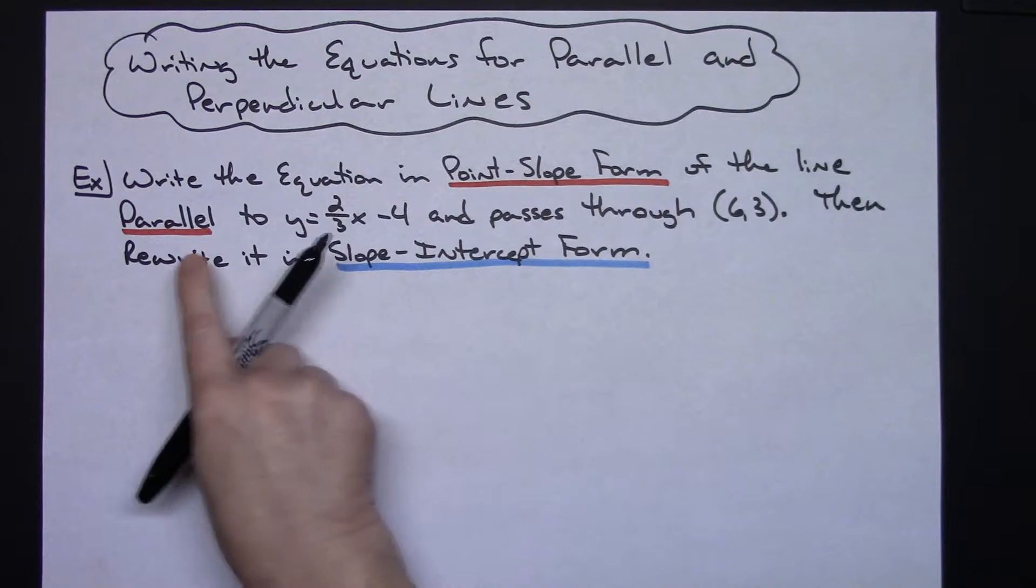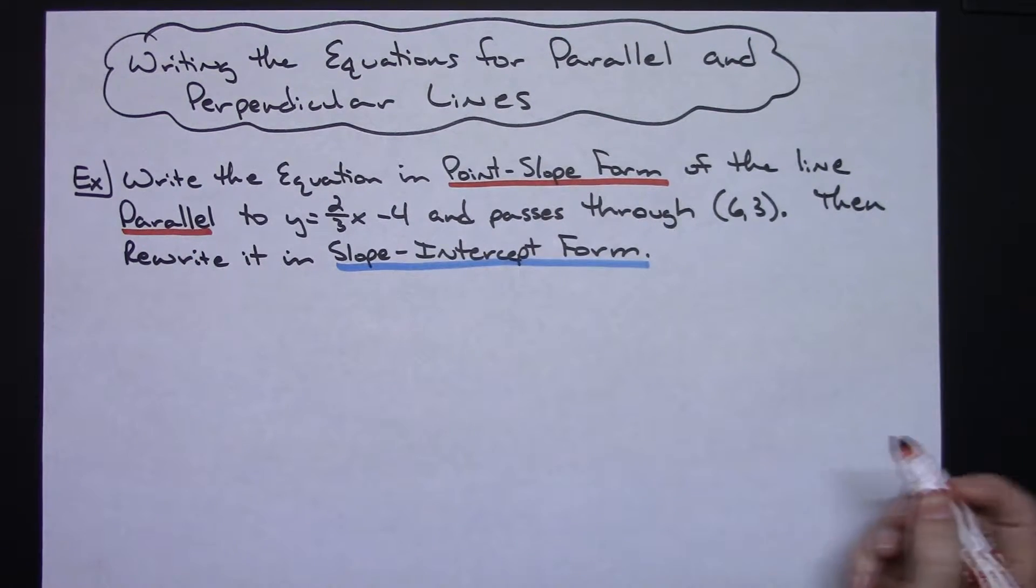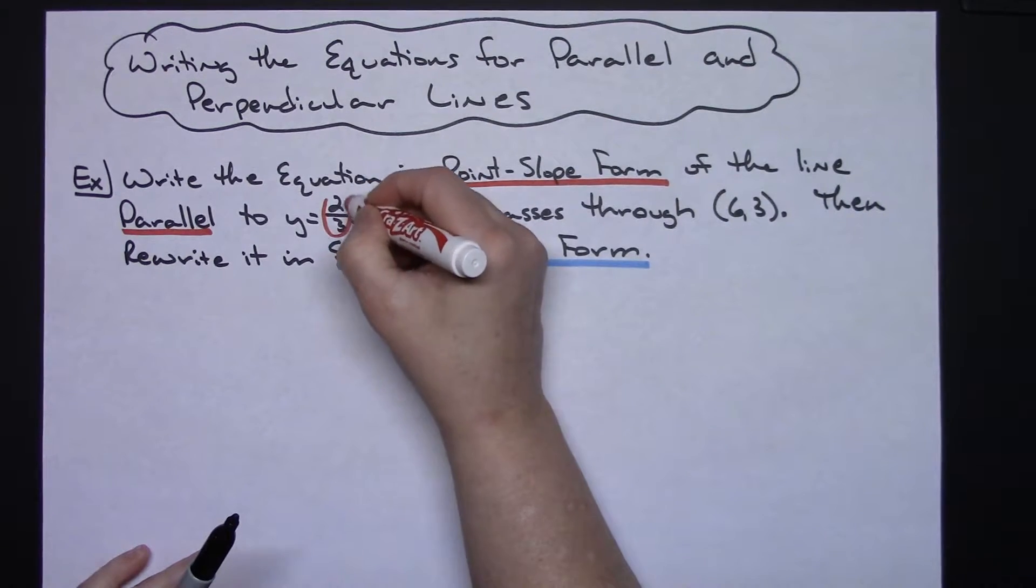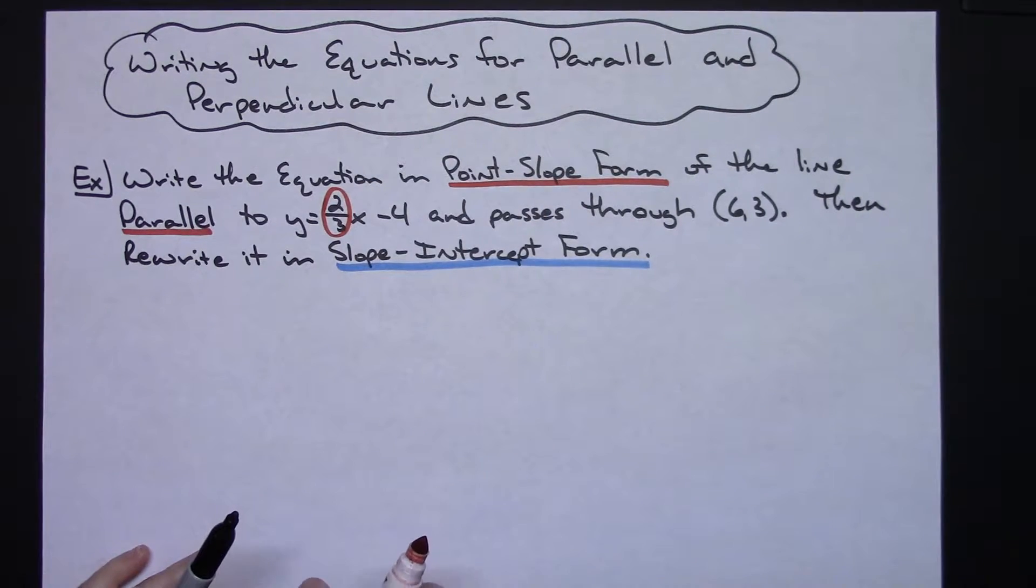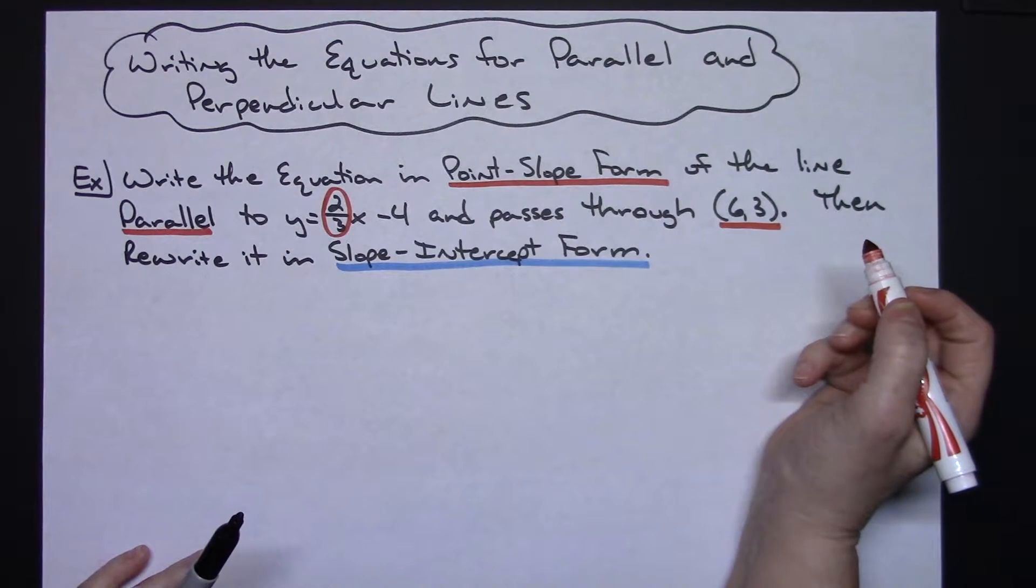So first of all, point-slope form and parallel. Alright, for it to be parallel I need it to have the exact same slope as that line and I need it to go through this point.